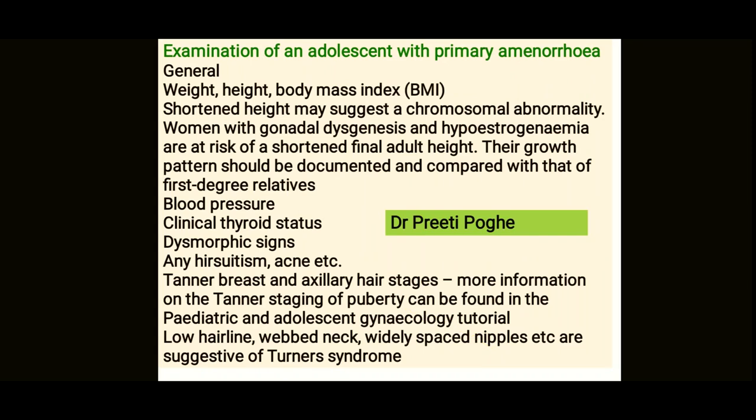For examination of primary amenorrhea patients, it all depends on whether secondary sexual characters are present or not. Do a full general examination: check height, weight, and BMI. Short stature may indicate chromosomal abnormality like Turner syndrome — women with gonadal dysgenesis and hypoestrogenemia are at risk of short final adult height. Check blood pressure, thyroid status, signs of congenital anomaly, and hirsutism or acne. Check breast development.